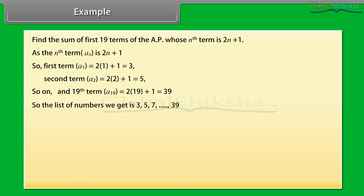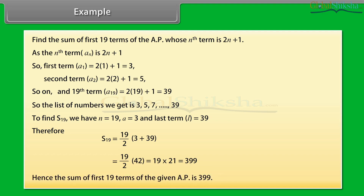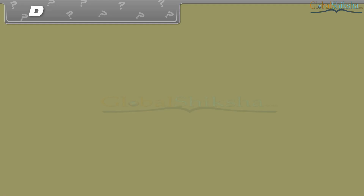The list of numbers is 3, 5, 7, ..., 39. To find S19 we have N = 19, A = 3, and L = 39. Therefore S19 = 19/2 × (3 + 39) = 19/2 × 42 = 19 × 21 = 399. Hence the sum of first 19 terms of the given AP is 399.